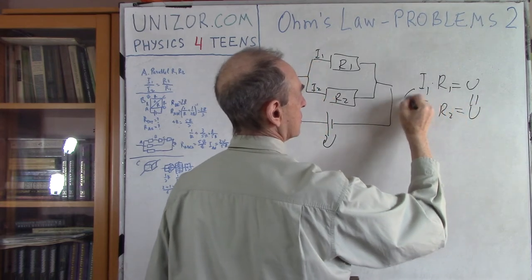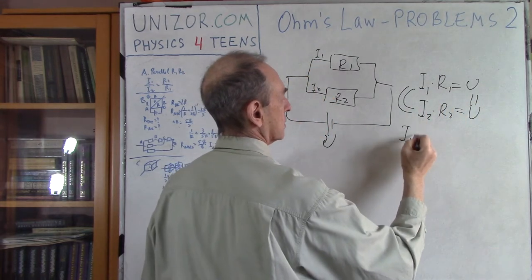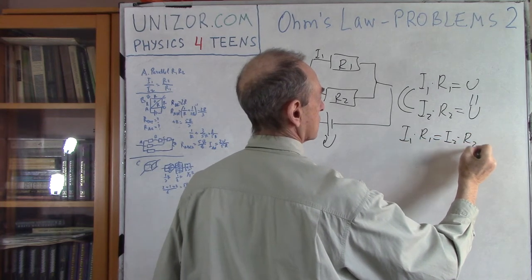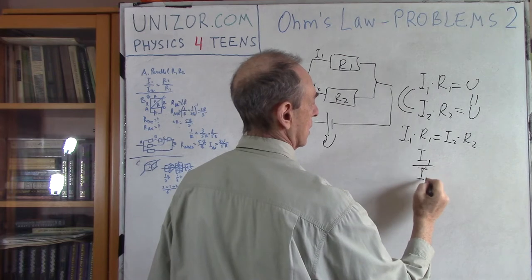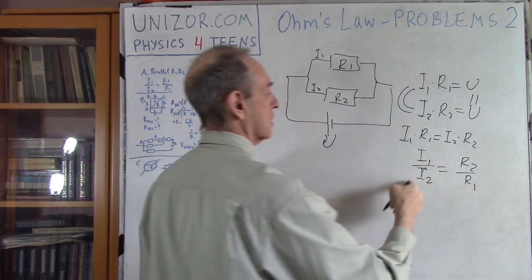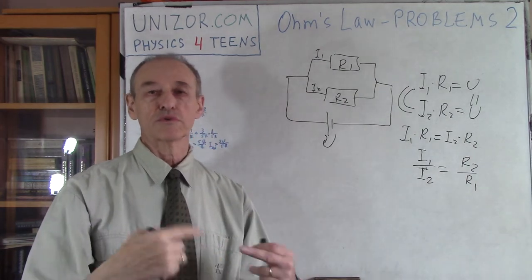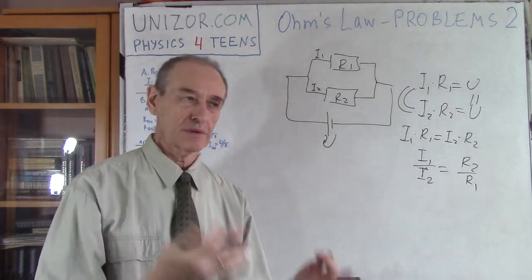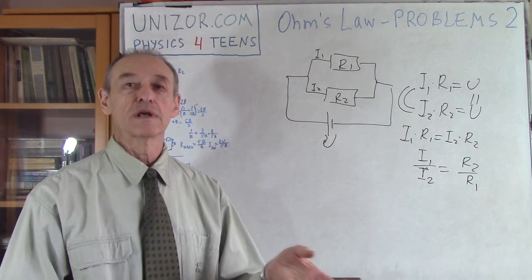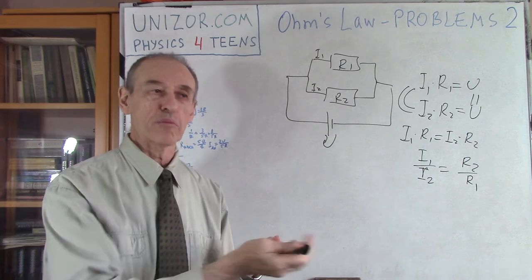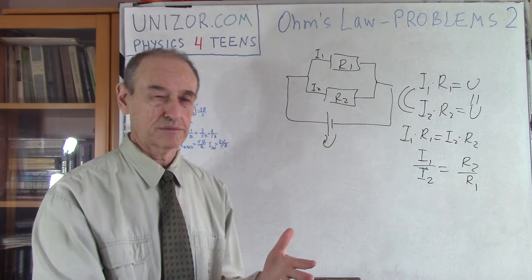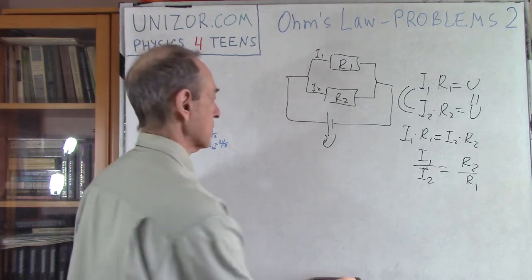So these are equal, meaning I₁ times R₁ equals I₂ times R₂, from which I₁ divided by I₂ equals R₂ divided by R₁. The currents are inversely proportional to resistances, which is logically obvious: the greater the resistance, the fewer electrons pass through per unit of time. Okay, this is easy.